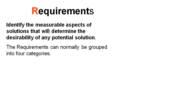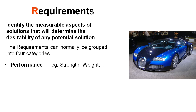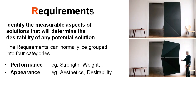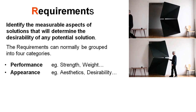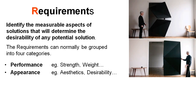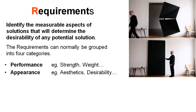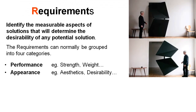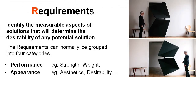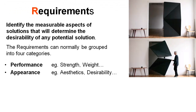Requirements. Here is where it starts to get a little bit tricky and we start to put some numbers on some of these options that we're coming up with. Normally we can group them into four categories. Those categories are performance, so things like strength, weight, speed, power, etc. These requirements are generally pretty obvious. The next one is appearance. Sometimes we have to think about the aesthetics and the desirability of the product that we're designing and developing. Engineers aren't always the best people to judge aesthetics and desirability, so sometimes we might bring in designers or even do clinic trials of potential customers to figure out what is going to appeal to our target market the most.